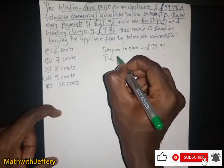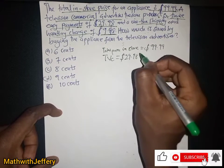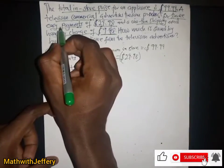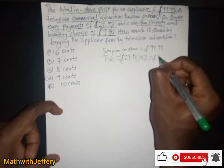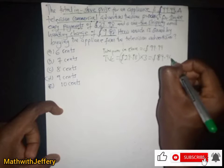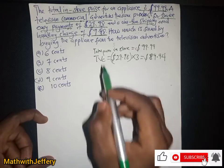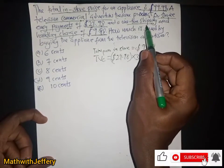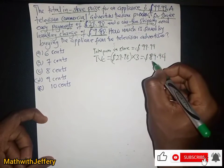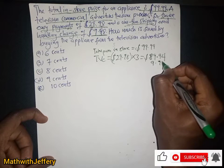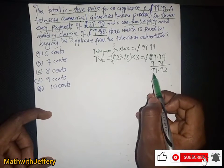So if they are advertising for $29.98 once, then for three easy payments we multiply: 3 times $29.98 gives us $89.94. Then we also add the one-time shipping and handling charge of $9.98, and this gives us $99.92.